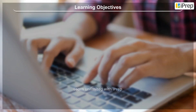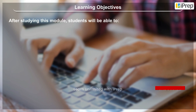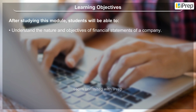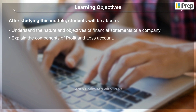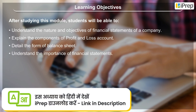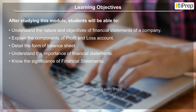Learning Objectives. After studying this module, students will be able to: understand the nature and objectives of financial statements of a company; explain the components of profit and loss account; detail the form of balance sheet; understand the importance of financial statements; know the significance of financial statements; and understand the limitations of financial statements.